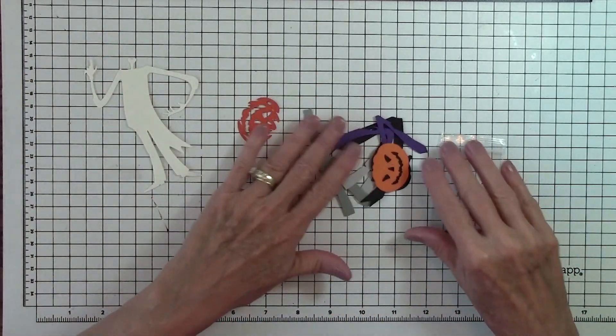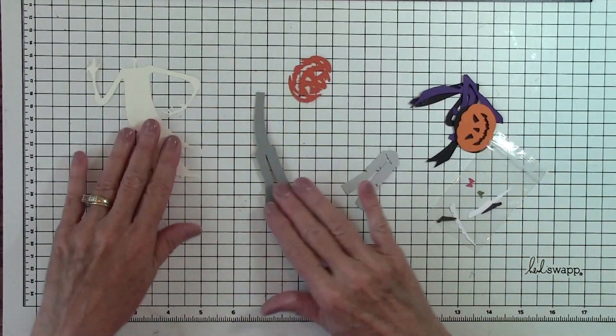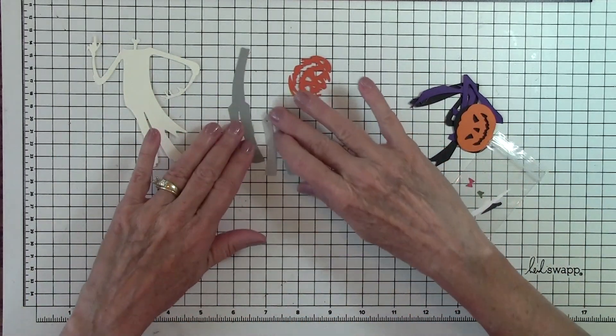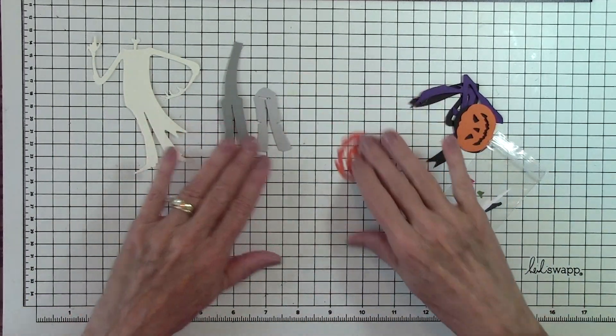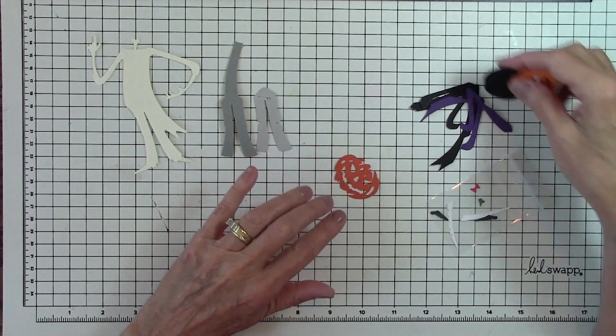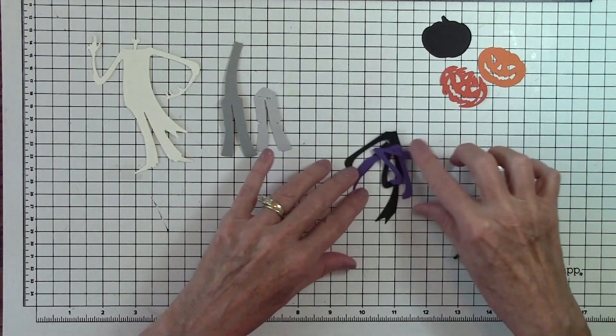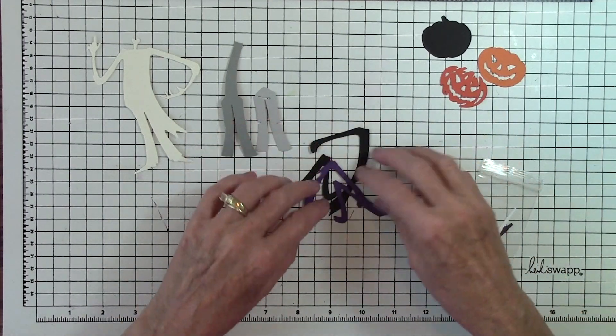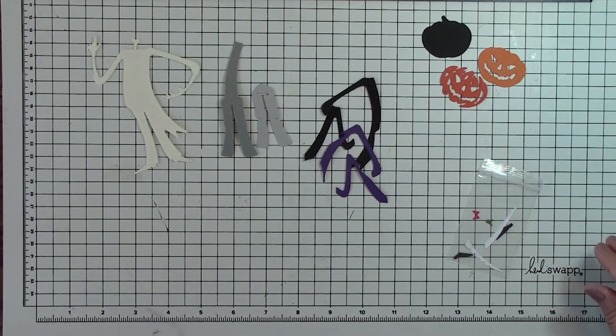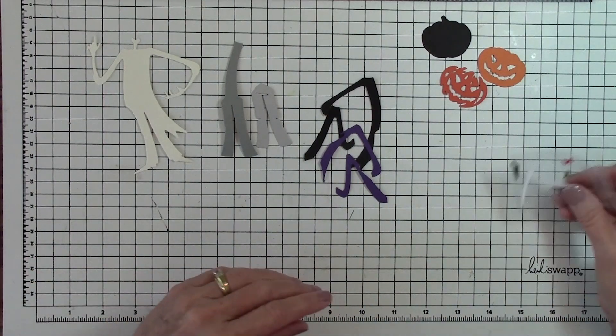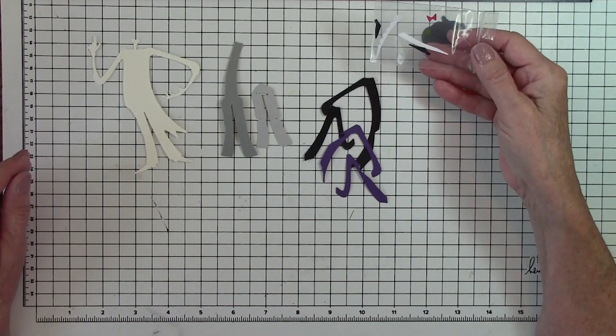So we have our man. And this is his pants. This is the tops of his pants. These pieces are for the Pumpkin Head. And then we have his jacket. And then the itsy bitsy pieces.